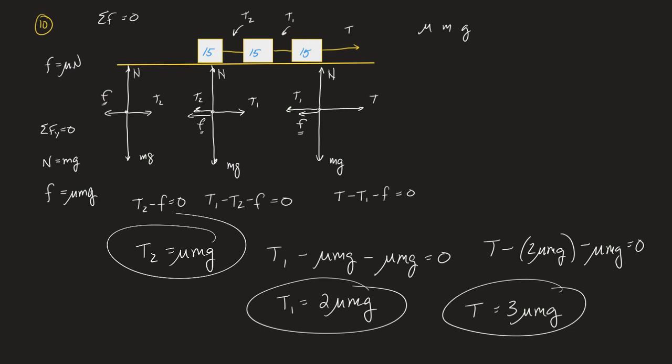The only thing that would make this problem harder is if it were accelerating. If it was accelerating to the right, you'd have an MA term on every equation and you'd have to figure out that acceleration first. This was simplified because it was moving at constant velocity.